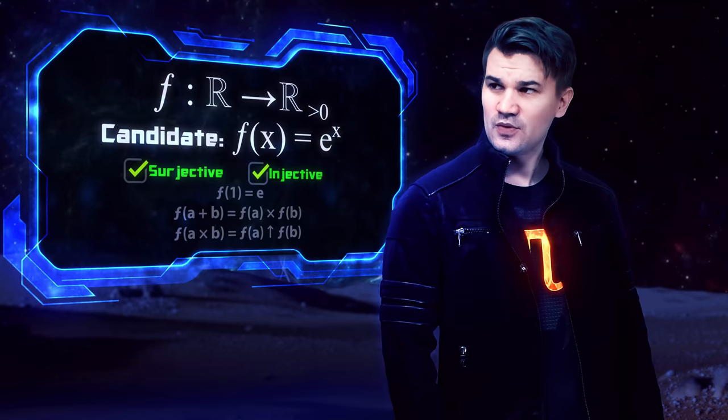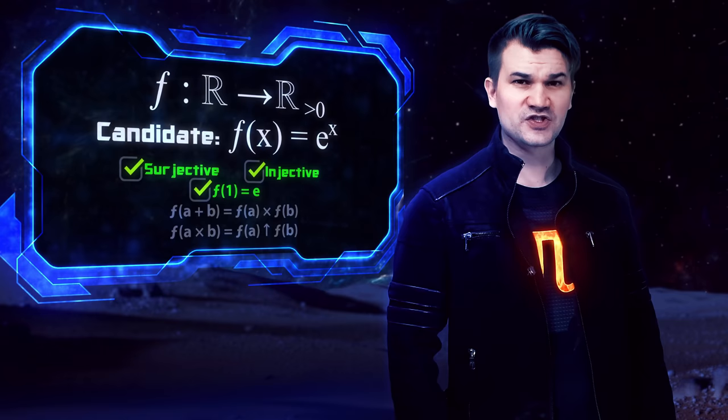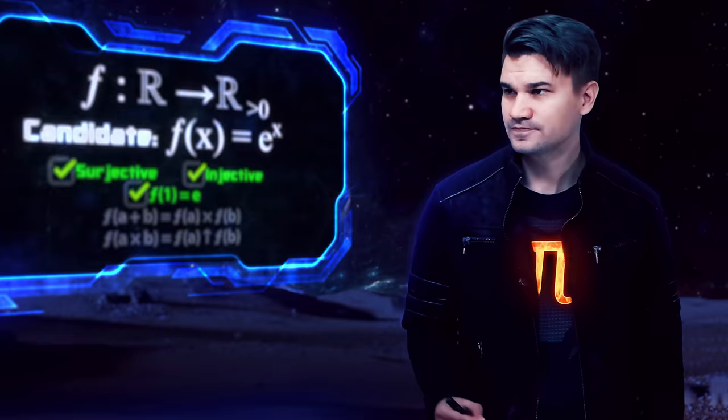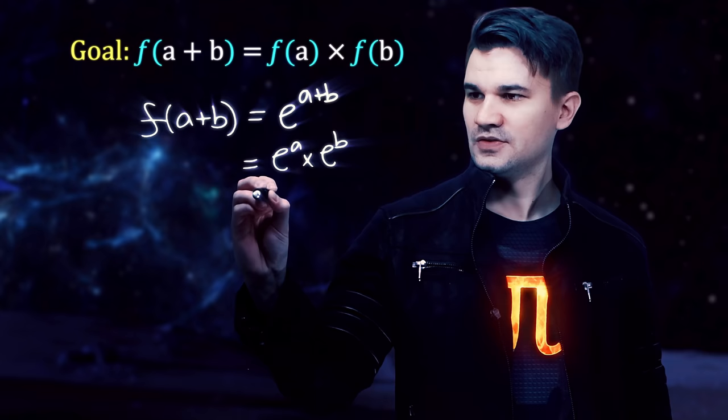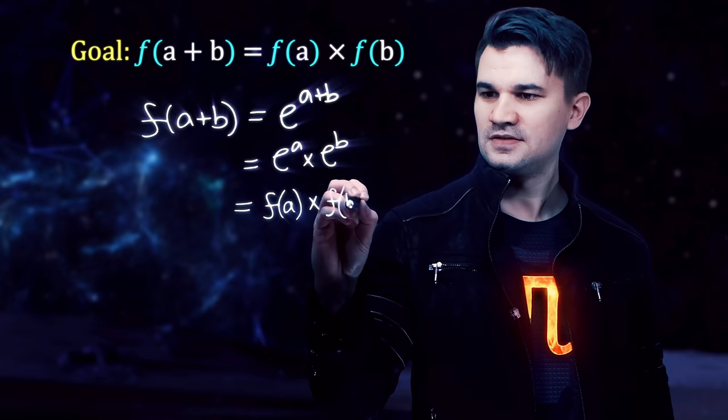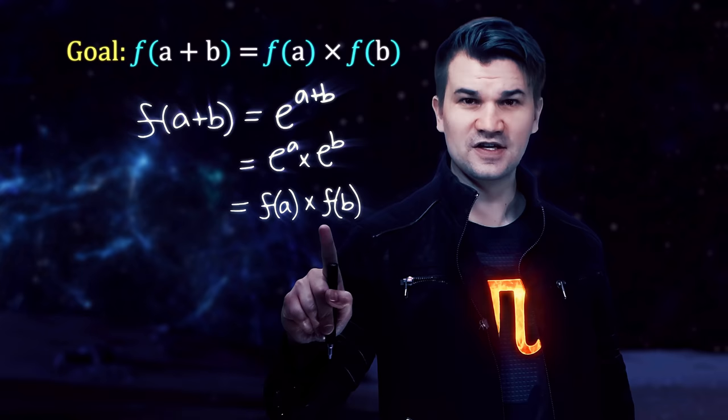So all we need to do is show that it preserves both operations. Let's show that addition is preserved by E to the X. F of A plus B is E to the A plus B, which is E to the A times E to the B, which is F of A times F of B. So addition is preserved by E to the X. Remember, multiplication is the addition of this new ring. So addition is preserved.